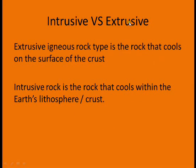Intrusive versus extrusive: extrusive igneous rock is the rock that cools on the surface of the crust. Intrusive rock is the rock that cools within the Earth's lithosphere, or the crust.